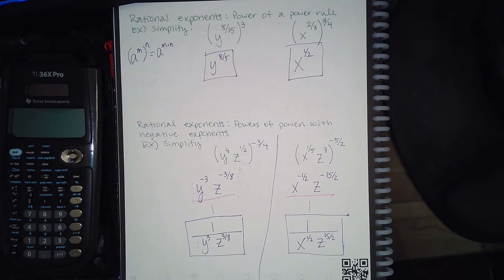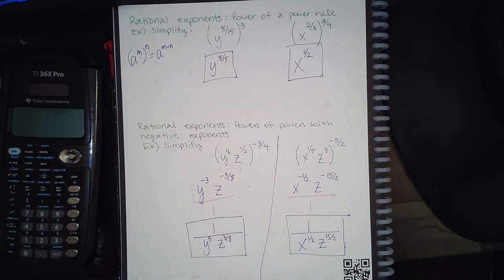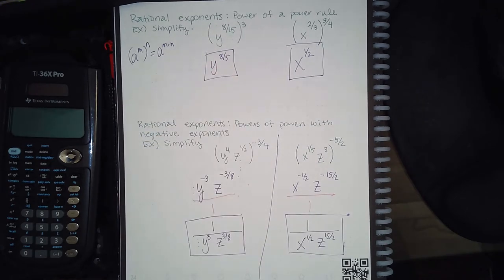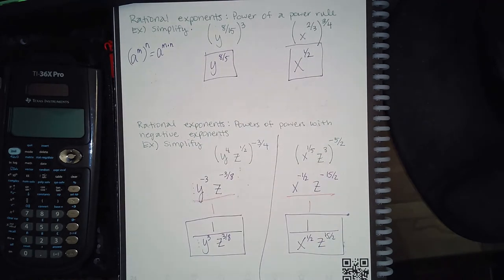Rational exponents — the power of a power rule. If I have an exponent raised to another exponent, I simply multiply those exponents together. So 8/15 times 3 gives me a new exponent of 8/5, and 2/3 times 3/4 gives me a new exponent of 1/2. You can multiply those fractions in your calculator or in your head, as long as the result is correct.